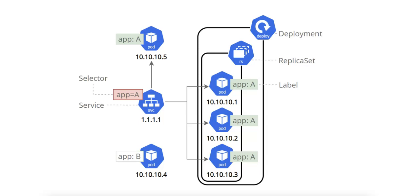Deployments also provide scaling — you can easily scale your application by increasing or decreasing the number of replicas in the deployment. And they provide rollback — deployments track the history of changes made to the application, and if an update goes wrong, you can roll back to a previous version.